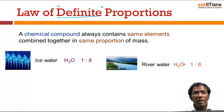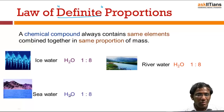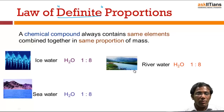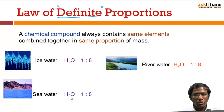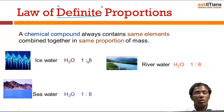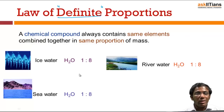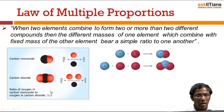River water also contains the same elements hydrogen and oxygen combined in the same mass ratio. Similarly, sea water also contains hydrogen and oxygen combined in this same ratio. So water, irrespective of the source — whether ice water, river water, or sea water — always contains hydrogen and oxygen combined in the same proportion of mass: 1 gram hydrogen to 8 grams oxygen. That's why this law is known as the law of definite proportions.